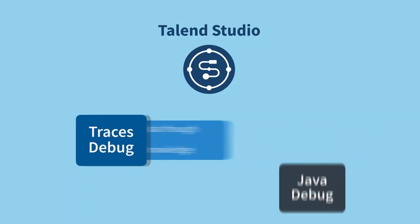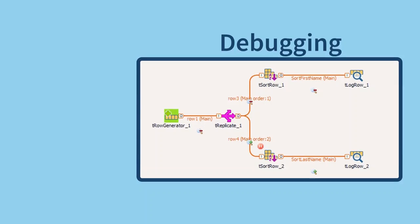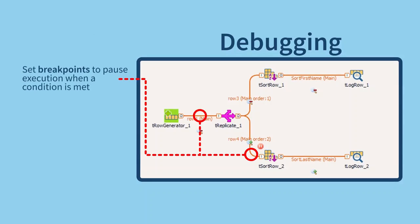When running a job in Java Debug mode, you can set breakpoints for Talon Studio to automatically pause execution when a specific condition is met in the Java code.